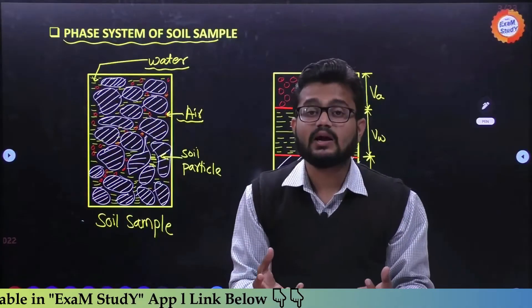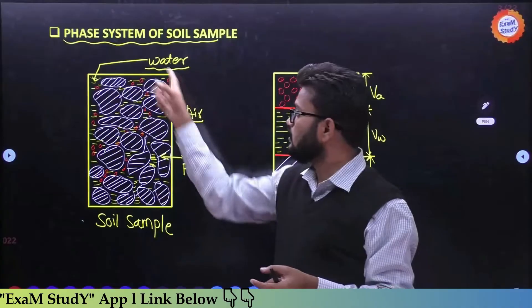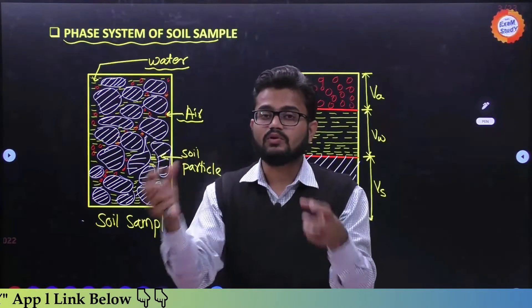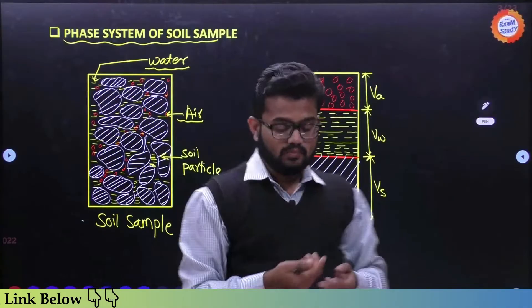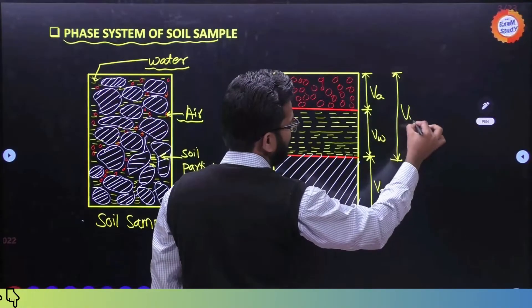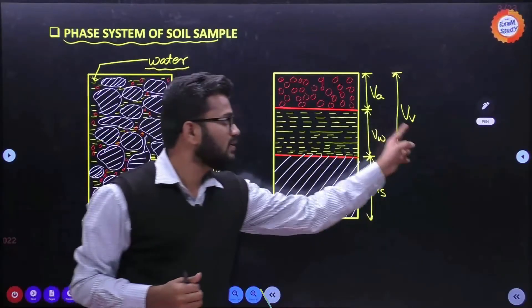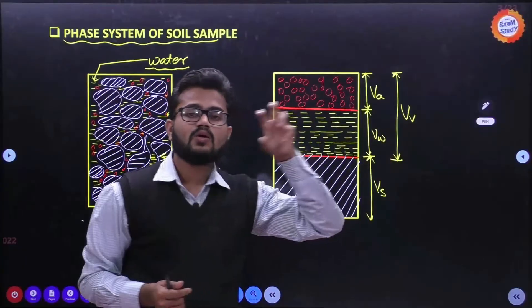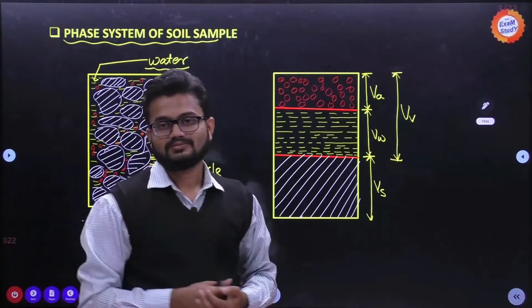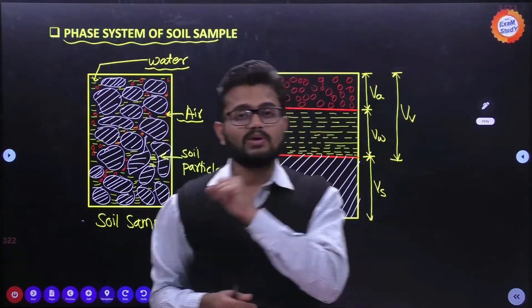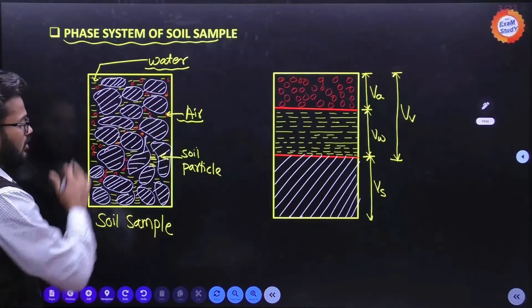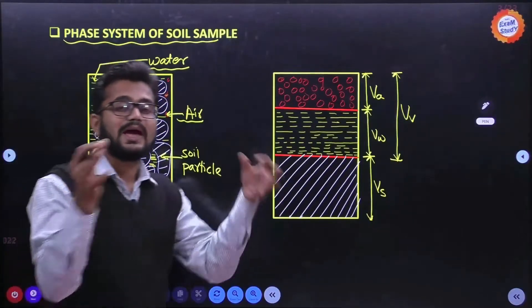The soil particles are solid. The voids - empty spaces between particles - are filled with air and water. The volume of air plus volume of water together gives the total volume of voids, denoted as Vv (V subscript V). So Vv = Va + Vw. The total volume V of the sample equals volume of solid Vs plus volume of voids Vv.